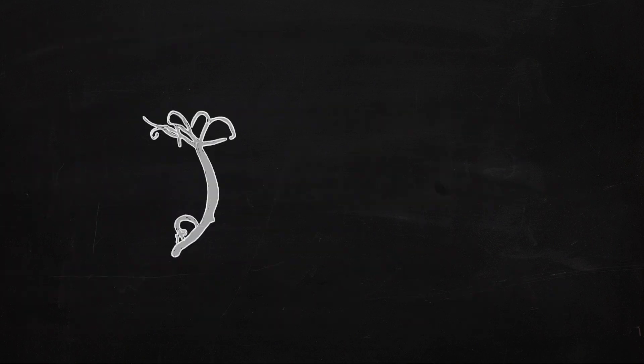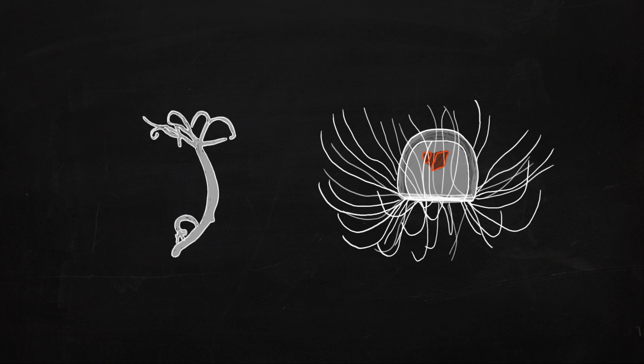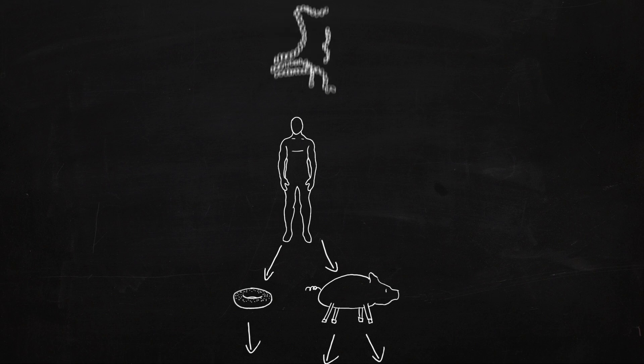There are some creatures like certain hydras and jellyfish that seem like they might not age. They could theoretically live forever if they didn't get eaten by anything. But since no one's really at the top of the food chain, all these organisms would still need to reproduce.